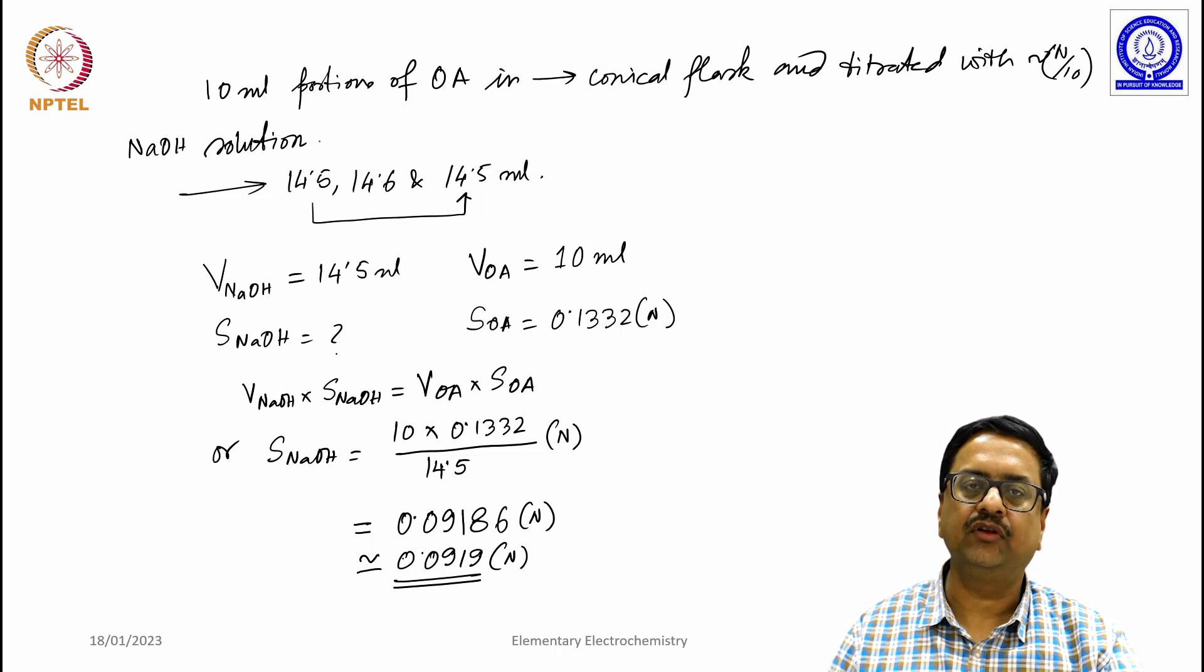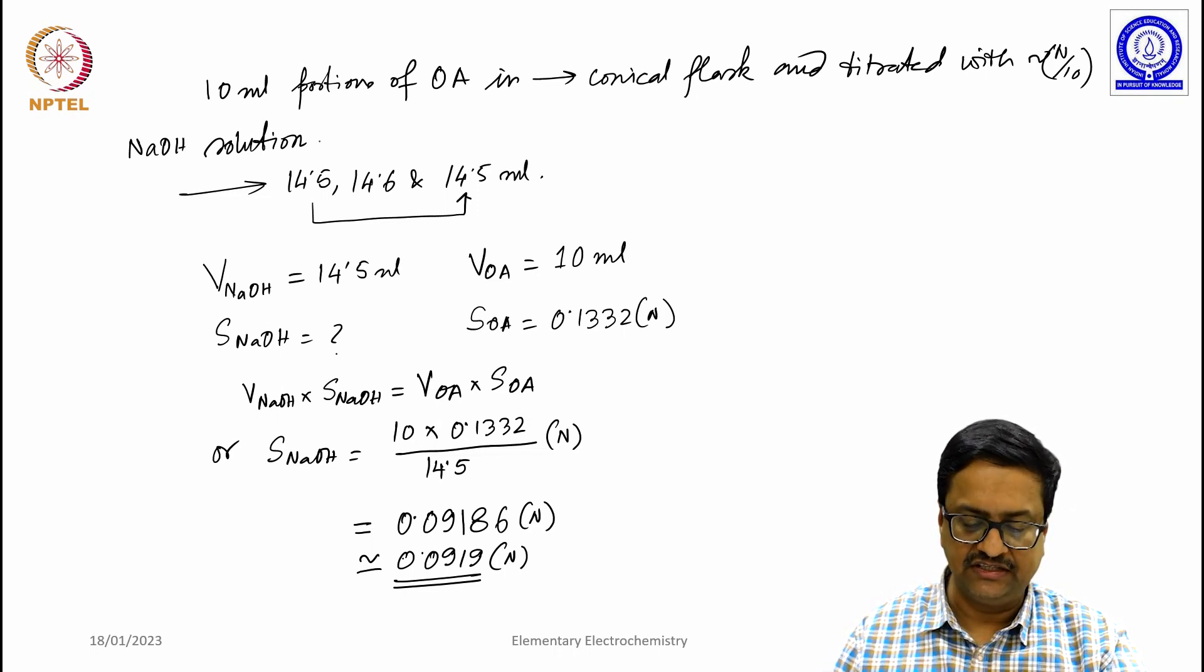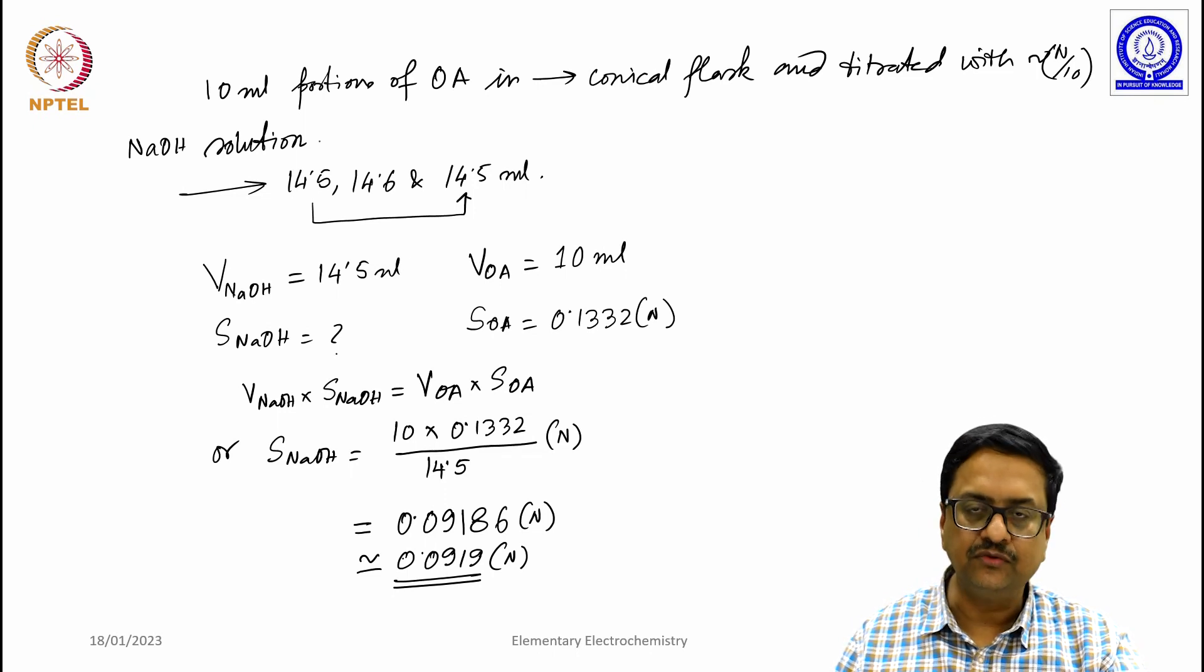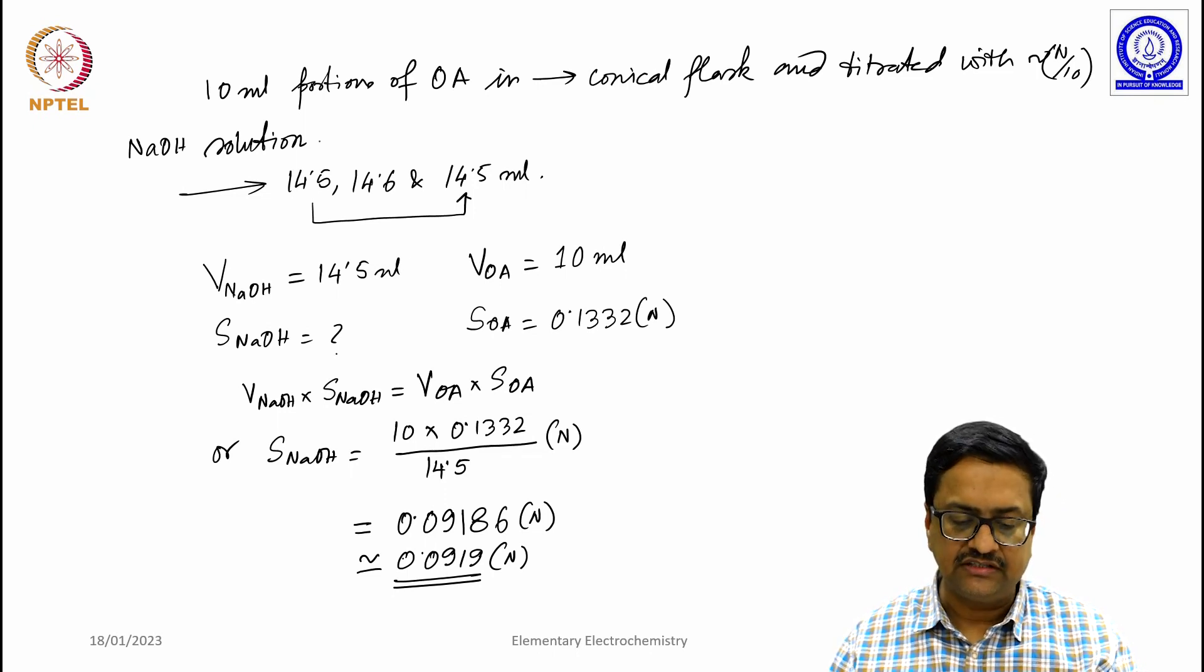because our weighing is accurate up to fourth decimal place. So this is the concentration of NaOH that we have used for this titration.